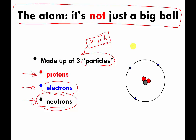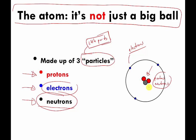The sizes of the particles and where they're located are not quite so random. The protons and the neutrons are roughly the same size, which is why I'm drawing relatively identically sized circles for the red and gray ones. The electrons are smaller than the other two, so they're going to be drawn as smaller circles.